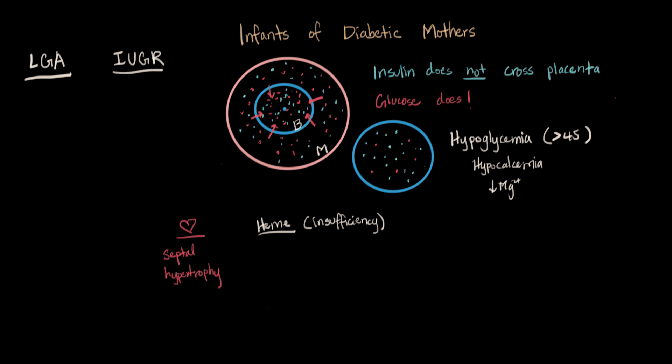one way that the body can respond is to make more oxygen-carrying cells. So they actually end up having a lot of red blood cells, and they have polycythemia,